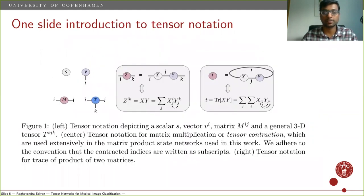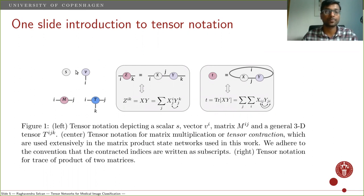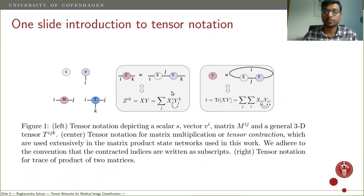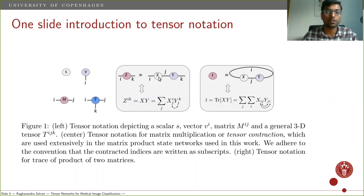Before that, a quick introduction to tensor notation. Tensor notation is a graphical way of representing high-order tensors and operations on them. An order-zero tensor, a scalar, is denoted by a node with no edges. The edges denote the order of the tensor: a vector, which is an order-one tensor, has one edge; a matrix is order two with two edges, and so on. Here we depict matrix operations in tensor notation. If you have two order-two tensors x and y, their matrix product results in another order-two tensor z. The index j is subsumed by matrix multiplication — in tensor jargon this is called tensor contraction, referring to the index over which the summation happens.